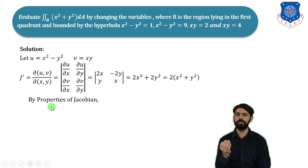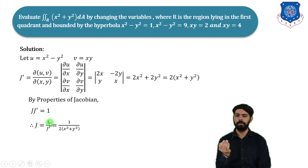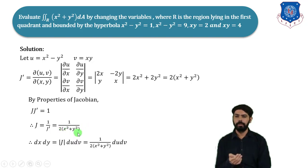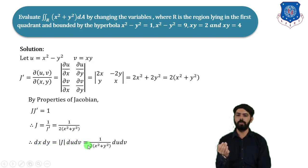By the Jacobian property, J × J' = 1, so J = 1/J' = 1/[2(x² + y²)]. Therefore, dx dy = |J| du dv = du dv / [2(x² + y²)].